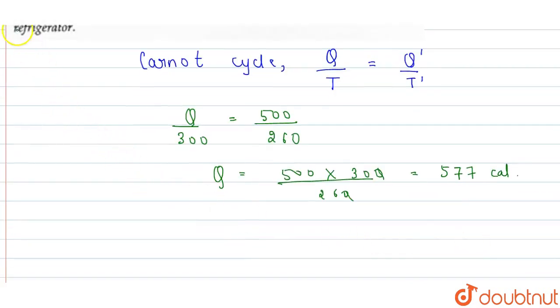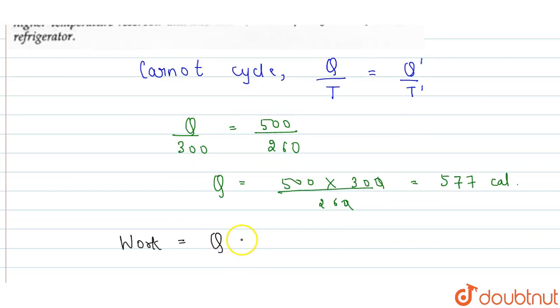Now, work done will be equal to Q minus Q prime. So work equals 577 minus 500, which gives us 77 calories.